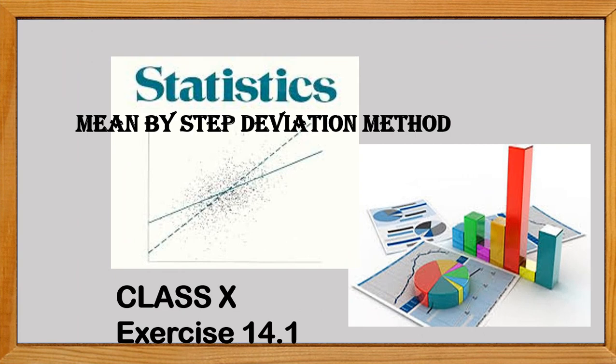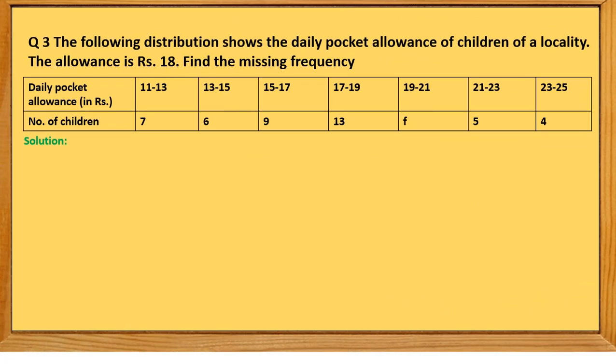Hello students. In continuation, today's session is based on the mean of data by the Step Deviation Method — Class 10, Exercise 14.1. Let's take Question Number 3: the following distribution shows the daily pocket allowances of children of a locality. The mean allowance is ₹18. Find the missing frequency.